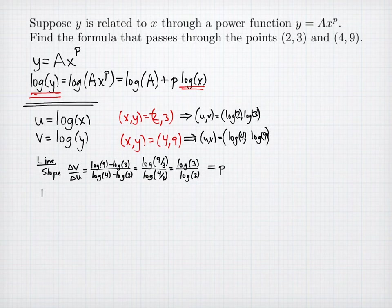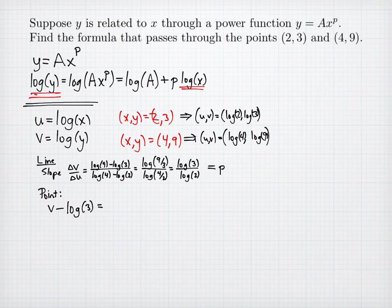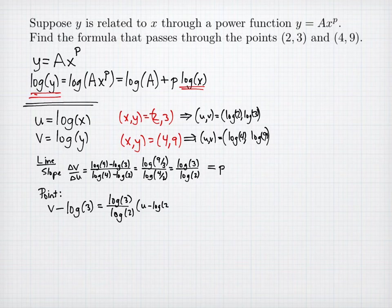Now that I have my slope, I can use a point along with the slope to come up with a line. Using the first point (u, v) = (log 2, log 3): v minus log 3 equals (log 3 over log 2) times (u minus log 2). This is the equation of my graph in the transformed coordinates.